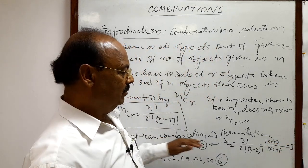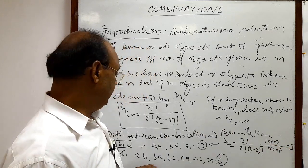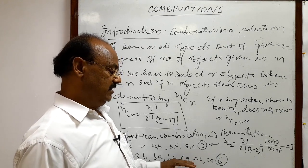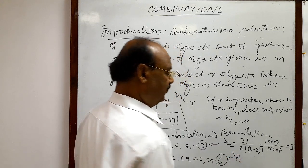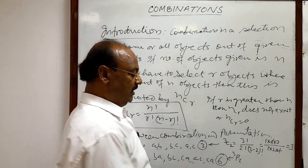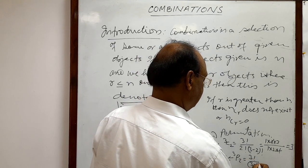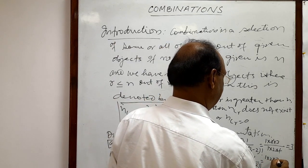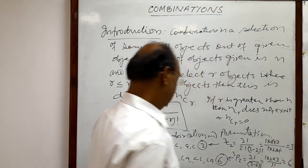In permutation, the number of possible arrangements is six. We write it as 3P2, which equals 3! / (3−2)! = (1×2×3) / 1 = 6. So 3P2 = 6.